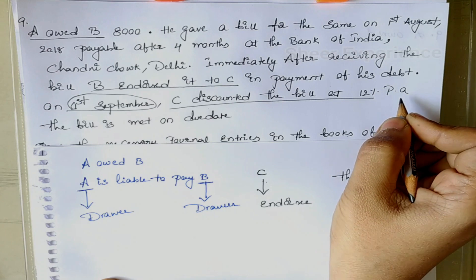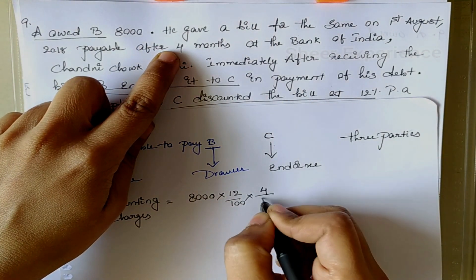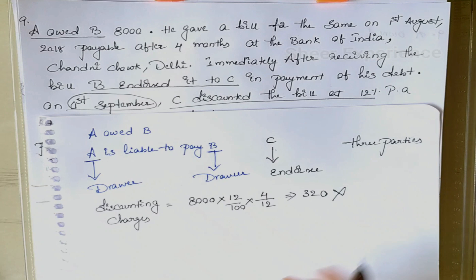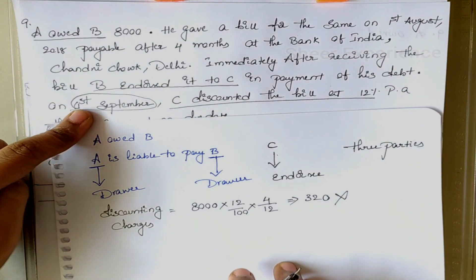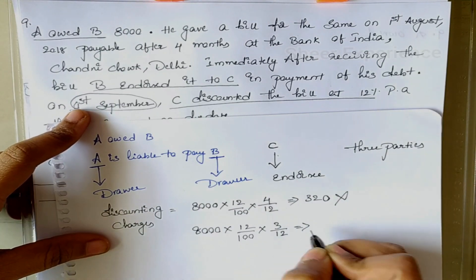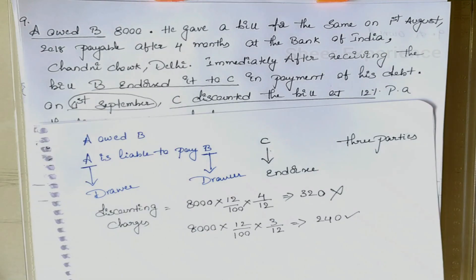Let's calculate the discounting charges. Bill amount is 8000, discount rate is 12%, bill period is 4 months. Initially 8000 × 12/100 × 4/12 = 320 — but this is wrong, because the bill was discounted on 1st September and drawn on 1st August. So we need to consider only 3 months, starting from 1st September. Discounting charges: 8000 × 12/100 × 3/12 = 240. Since credit sales are not mentioned, we directly write the acceptance journal.